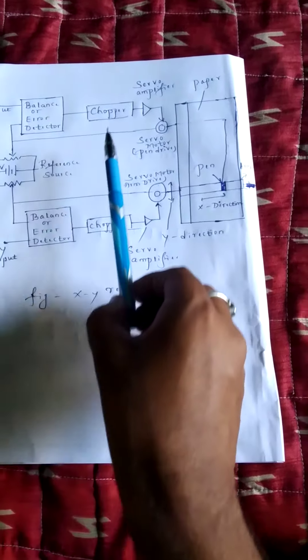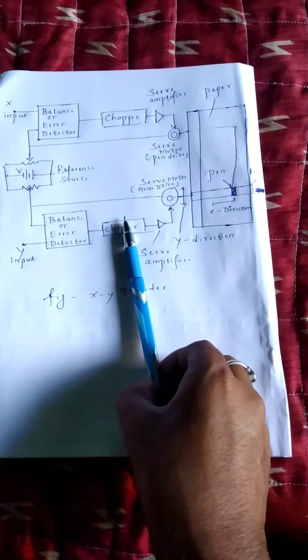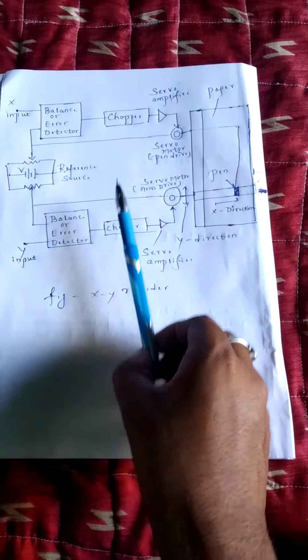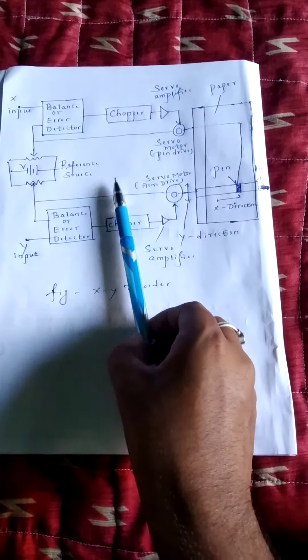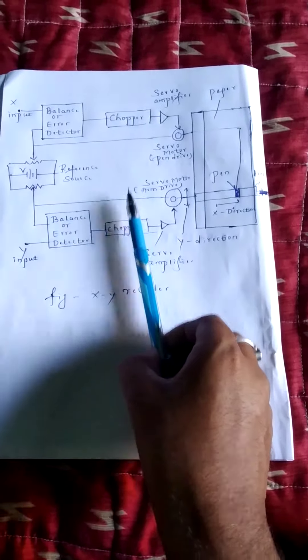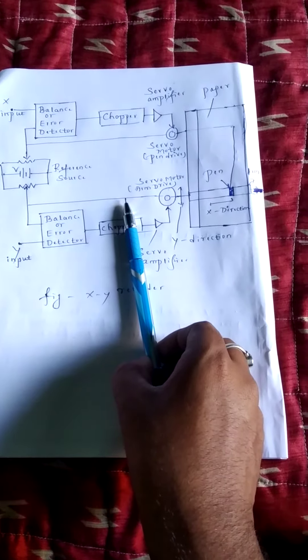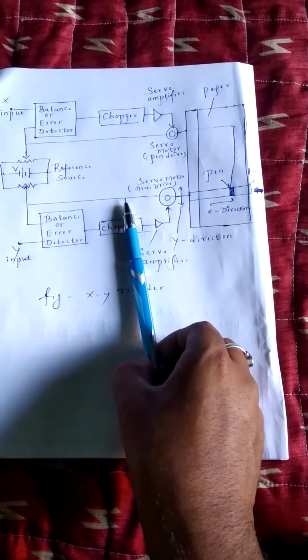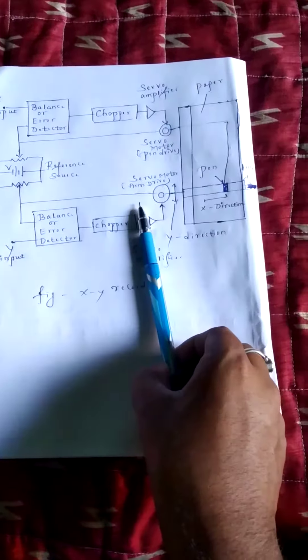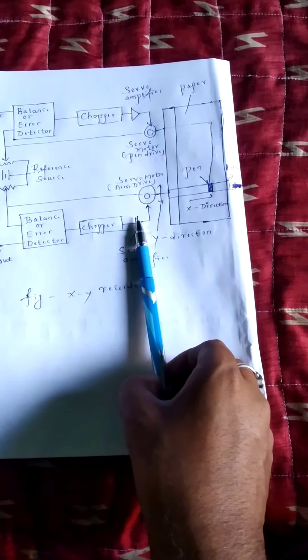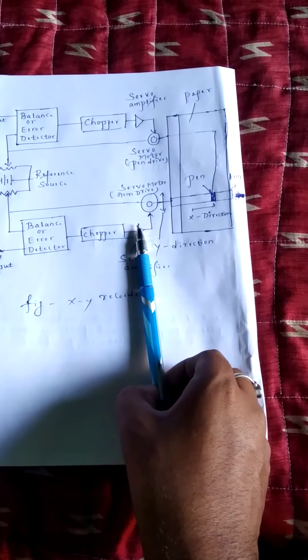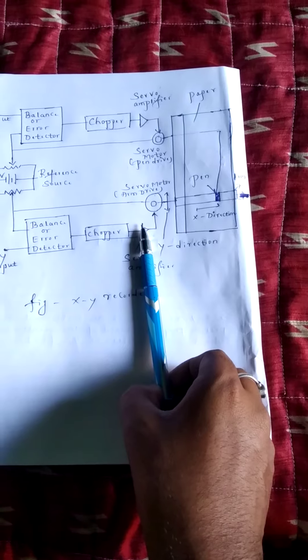Fourth point, the chopper circuit converts this DC error signal into AC signal. As this AC error signal is not sufficient to drive the motor, it is amplified by an AC amplifier.